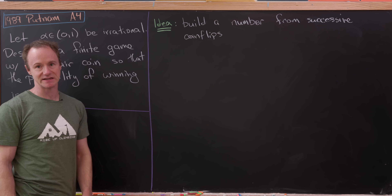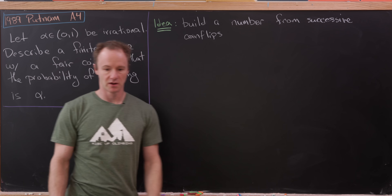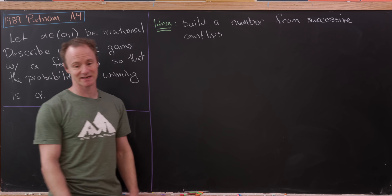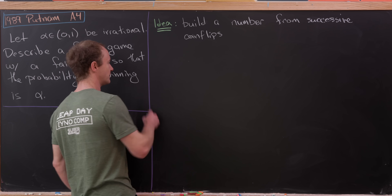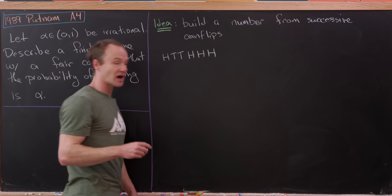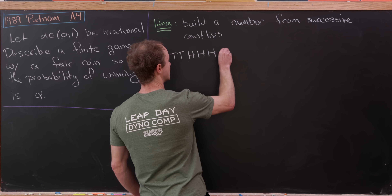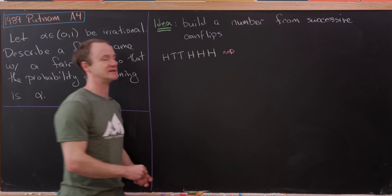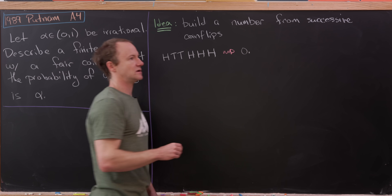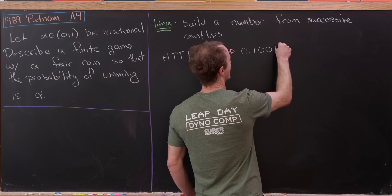Here's the general idea of how to get started. We want to build some sort of number from successive coin flips. For instance, if you were to flip heads, tails, tails, heads, heads, heads and stop there, what number would that correspond to? It should be a number between 0 and 1, so perhaps it corresponds to 0.100111.